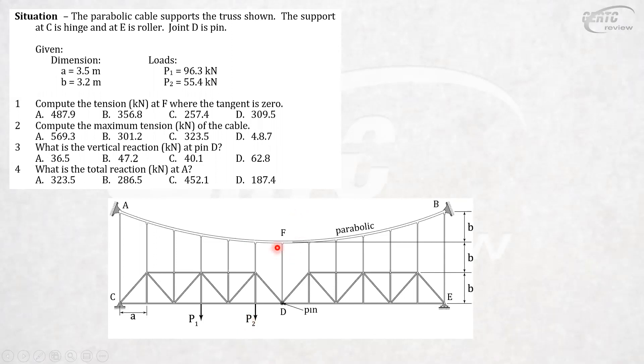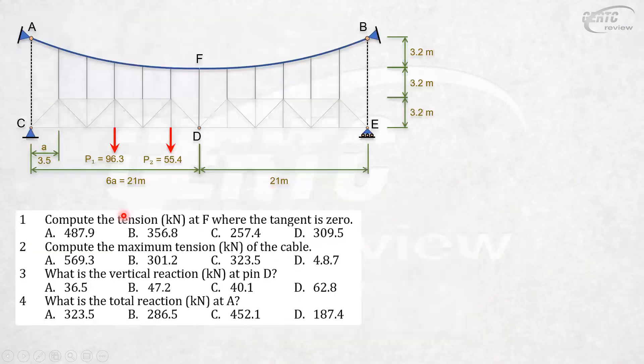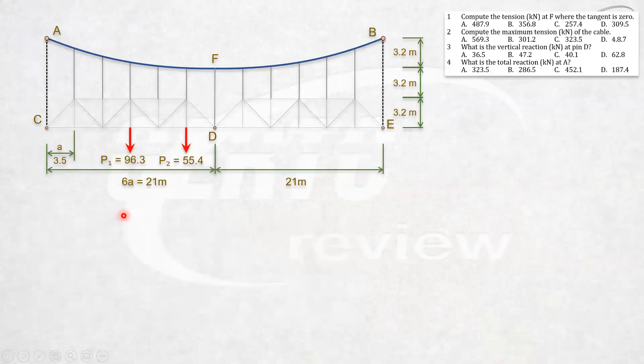The questions: the tension at F, which is the lowest part of the cable where the tangent is zero; the maximum tension in the cable, which will occur at the highest point of the cable; the vertical reaction at the pin at D; and the total reaction at A. So this is our problem. Let's put the dimensions in the figure. So how will we start? What are the principles in this problem?